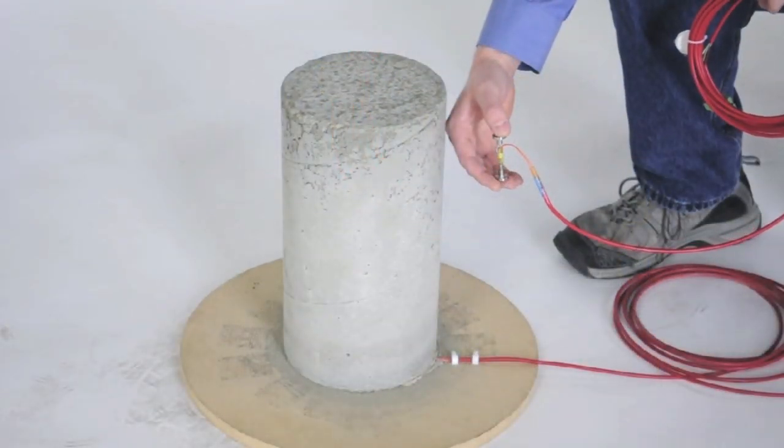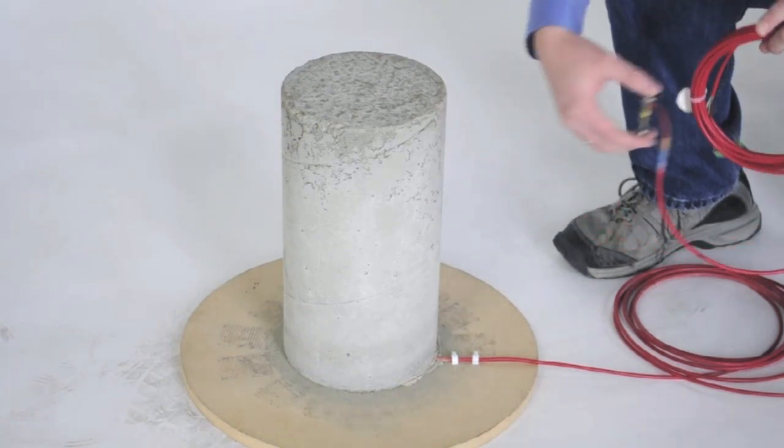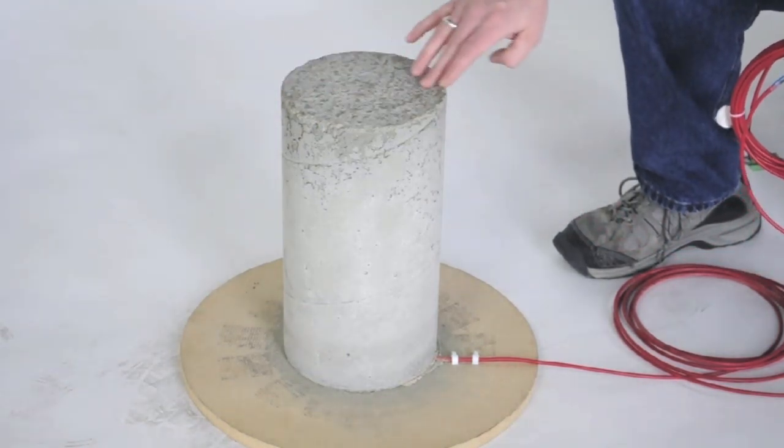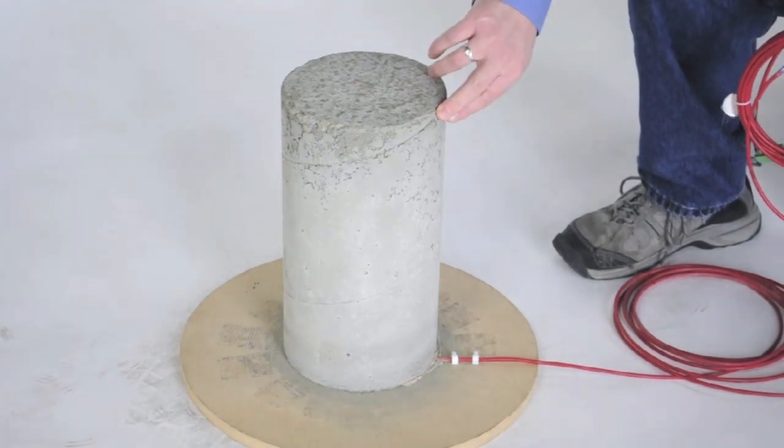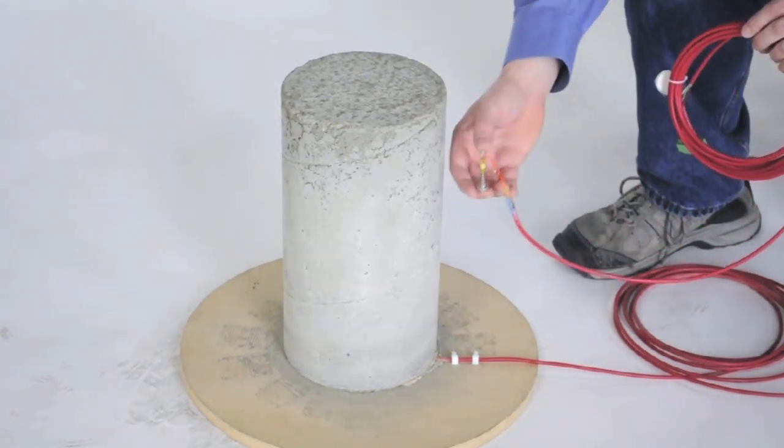We have installed one of these gauges in a small pillar of concrete. The pillar is about seven and a half inches across and fourteen inches tall. The gauge is oriented vertically in the pillar.